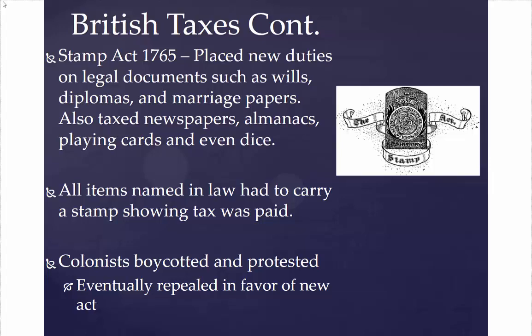The colonists didn't like the Sugar Act and the tax on molasses — there were many boycotts and protests. The British responded by passing the Stamp Act in 1765, which placed taxes on legal documents and paper items including wills, diplomas, marriage papers, newspapers, almanacs, playing cards, and even dice. When you bought these things, you would receive a stamp on the documents proving you had paid the tax — one shilling in the example shown.